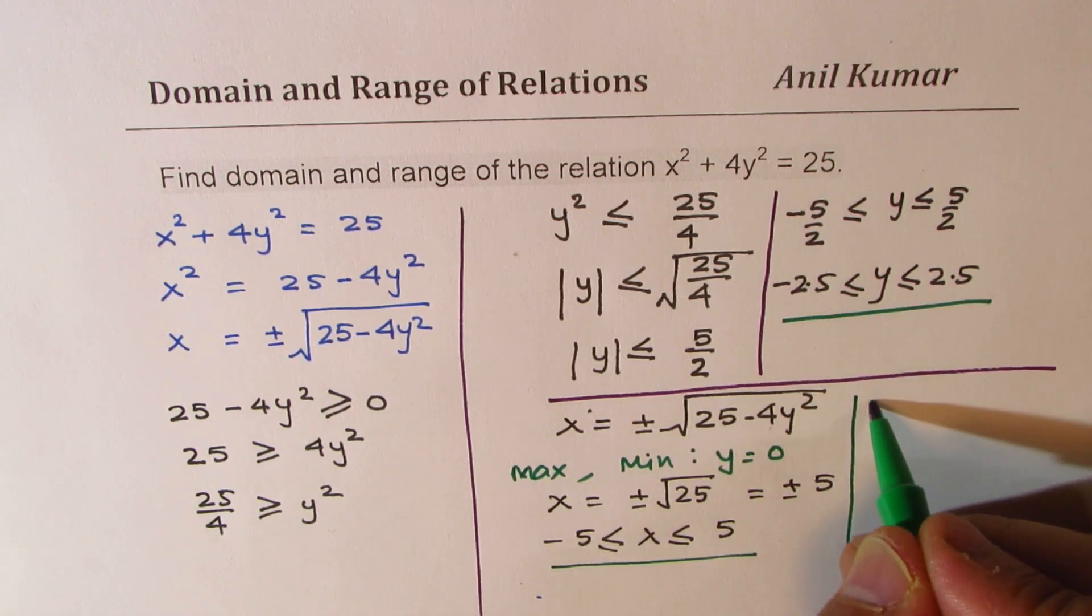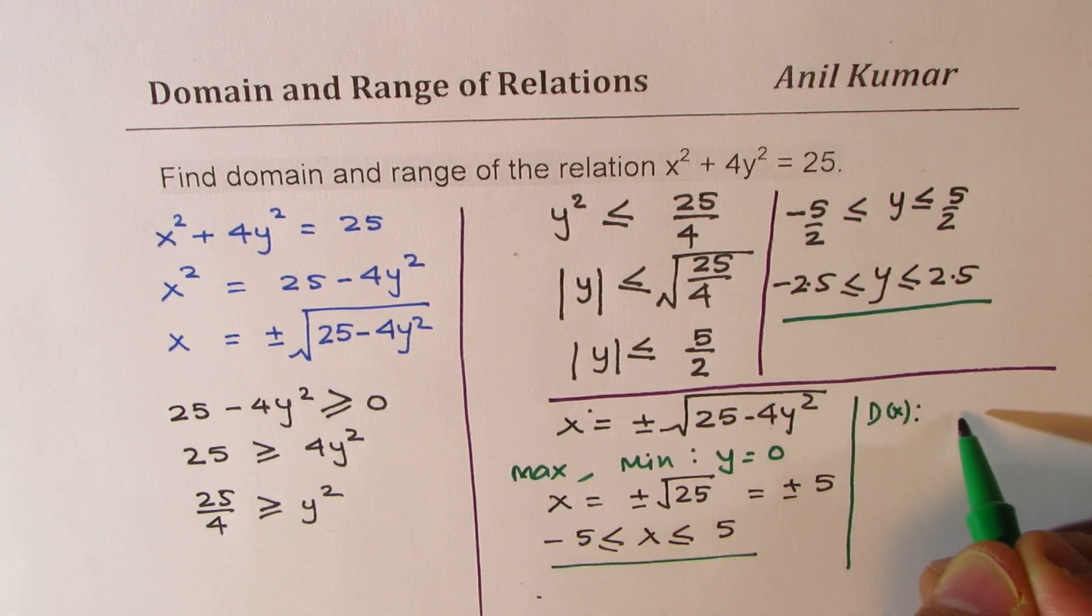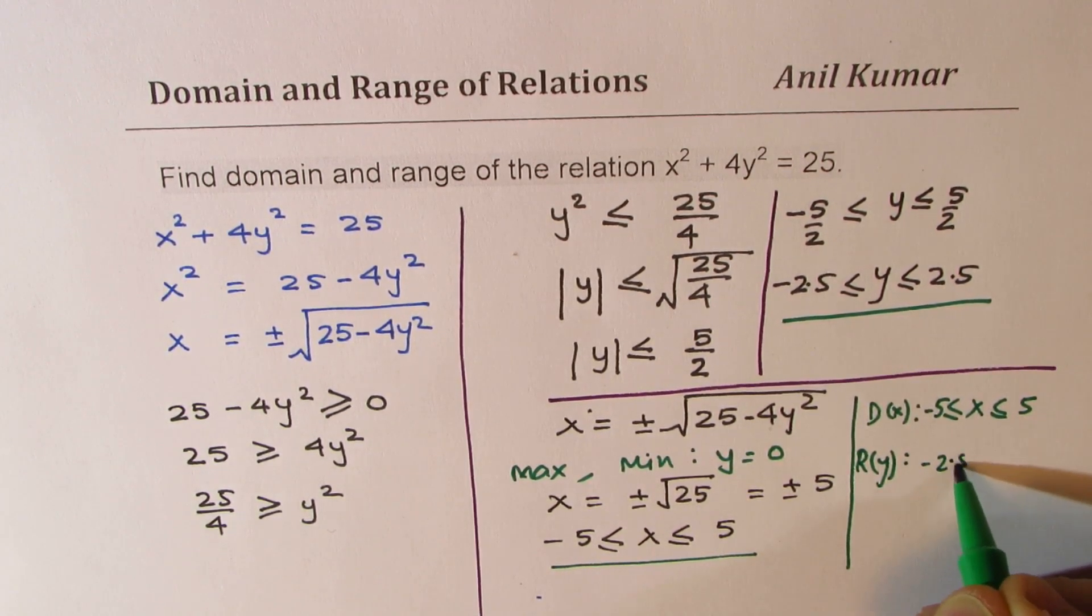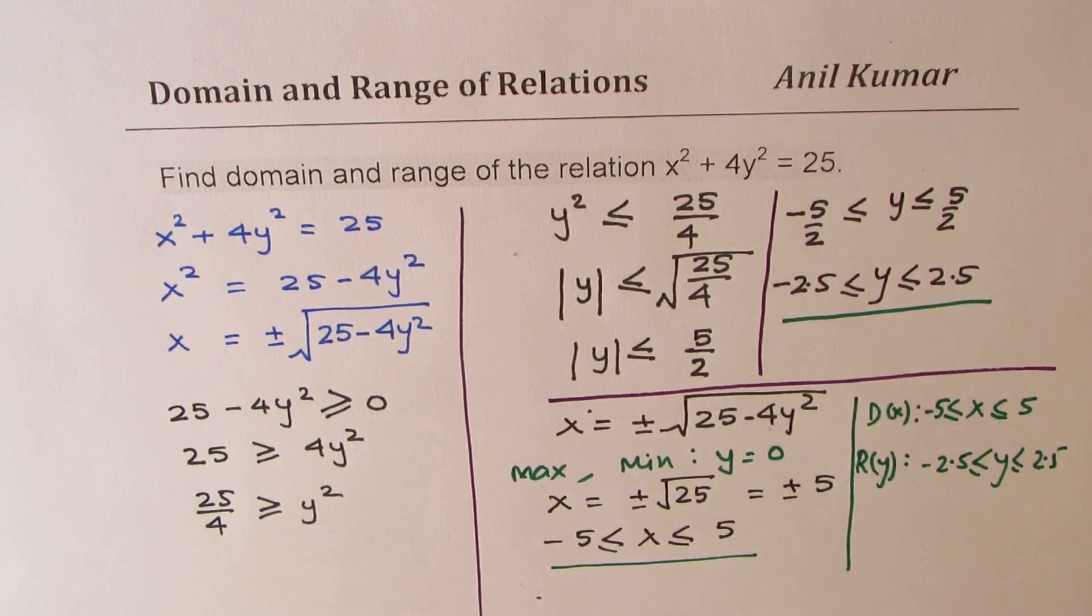So we can say that the domain is between -5 and +5, and the range is between -2.5 to +2.5.